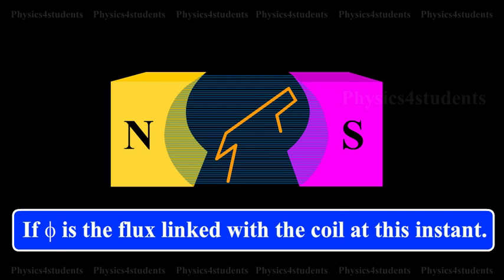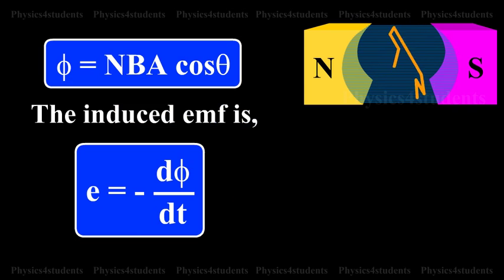If phi is the flux linked with the coil at this instant, then phi equals NBA cos theta.